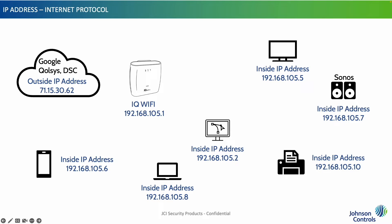Knowing this can help you troubleshoot and validate what network your cameras or consumer printer might be on. With IQ Wi-Fi, that third octet will always be 105. The last group of numbers on the LAN defines each node. The node will have a unique number in that fourth octet, and this is how they know how to communicate with one another.